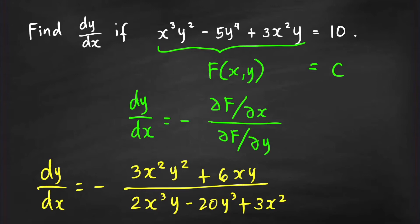Finding partial derivatives is like finding regular derivatives. When taking ∂f/∂x, you consider x as your variable and treat y as constant. When taking ∂f/∂y, you treat y as your variable and consider x as constant. If f(x,y) = x³y² − 5y⁴ + 3x²y, then for ∂f/∂x we treat y as constant.